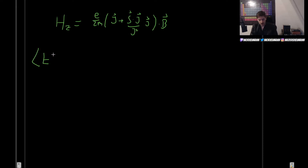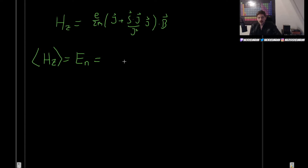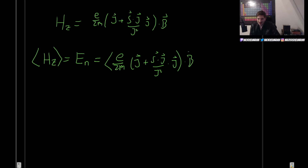The expectation value of the Hamiltonian gives us the energy correction. Let's calculate that. The expectation value is e over 2m times J plus S dot J over J squared, all dotted with B. We can choose to align our magnetic field in the Z direction, so B equals B_ext times ẑ.